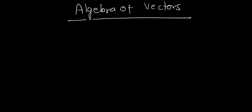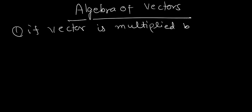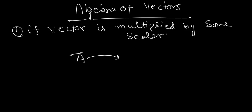Hi, in this video I'll be taking algebra of vectors. This is video number 3 for vectors. The first point is that if a vector is multiplied by some scalar, then for vector A, I have 2 multiplied by this vector, which will be 2A vector.